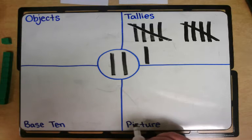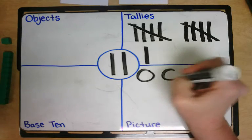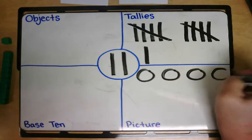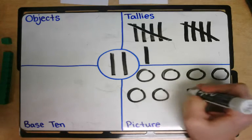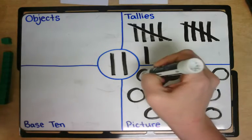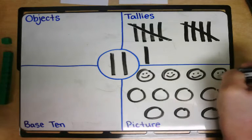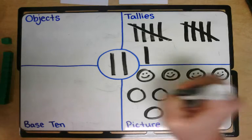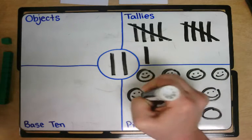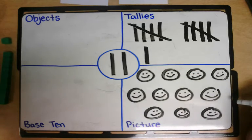We could represent the number eleven using a picture. One, two, three, four, five, six, seven, eight, nine, ten, eleven. Maybe I wanted a picture of eleven happy people. Eleven smiling faces and this is what eleven looks like as a picture. It could be a picture of anything. As long as there's eleven it will represent the number eleven.